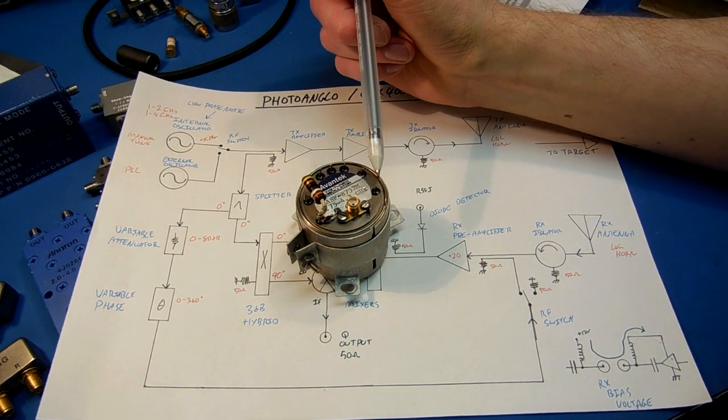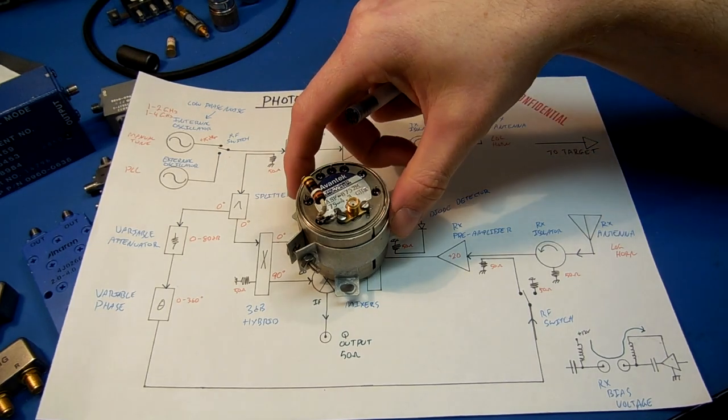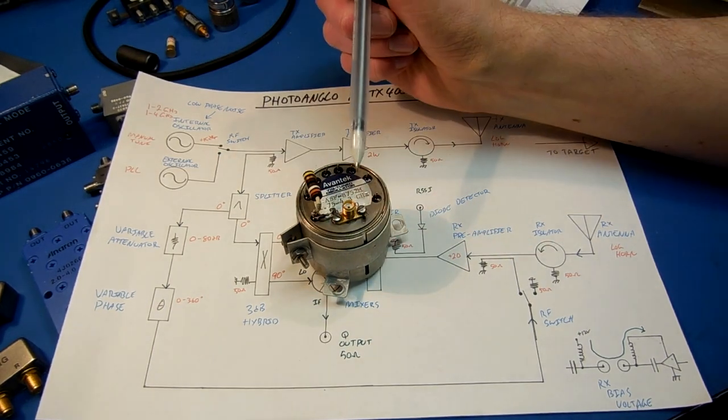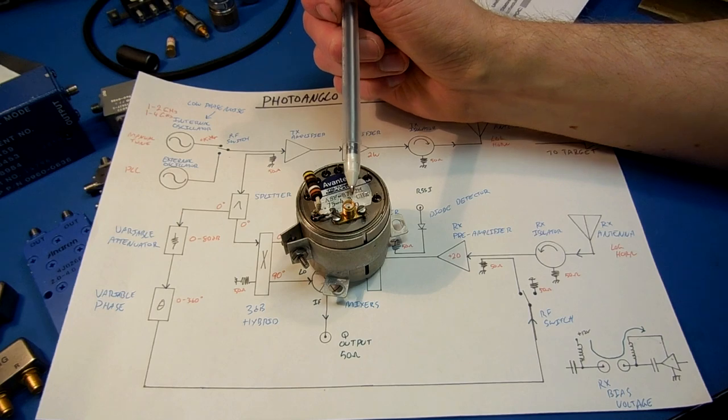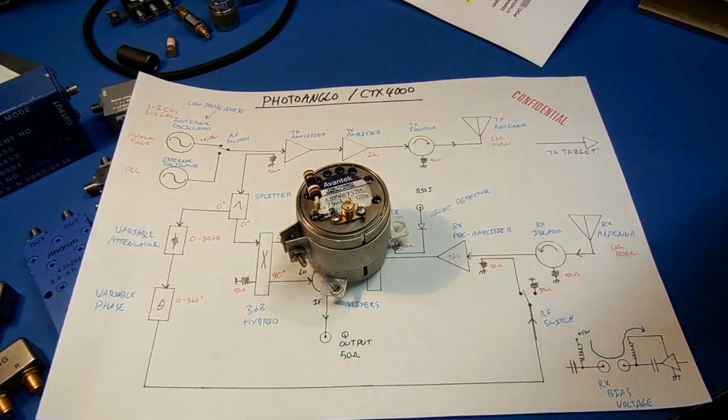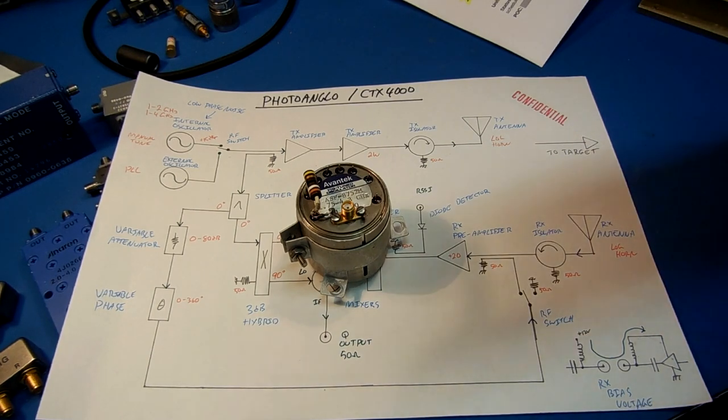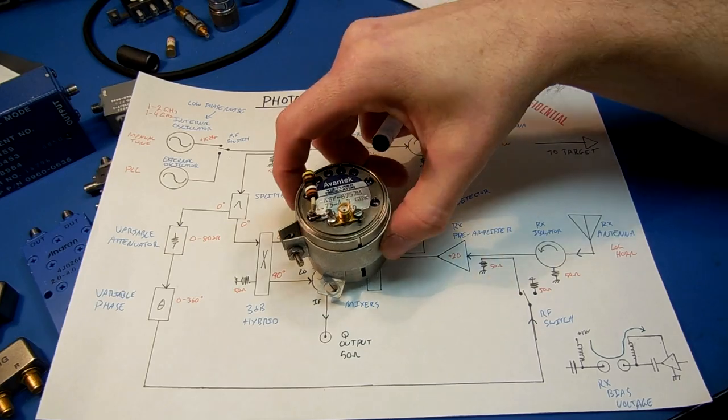These are current controlled instead of voltage controlled. They tend to have really low phase noise, which is ideal for these applications because any noise on our signal is going to be amplified further. Since we're already dealing with weak signals to begin with, we don't want any phase noise interfering with our received intelligence.